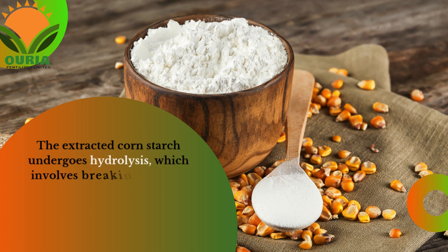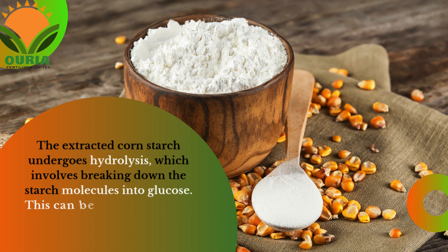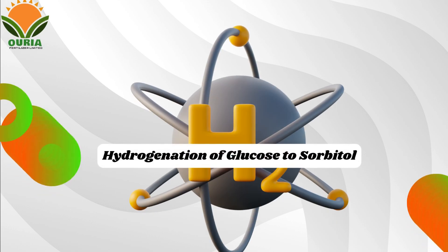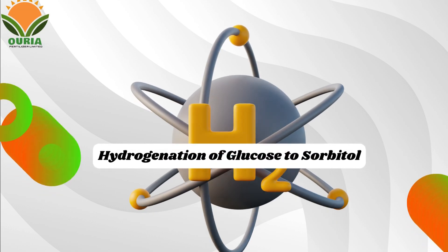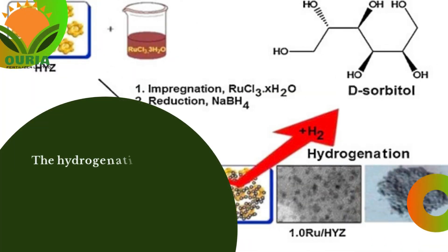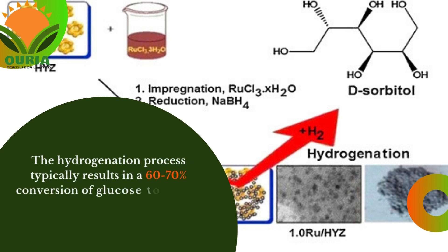Hydrolysis of corn starch to glucose: The extracted corn starch undergoes hydrolysis, which involves breaking down the starch molecules into glucose. This can be achieved using an acid or enzyme-based process. Hydrogenation of glucose to sorbitol: The hydrogenation process typically results in a 60 to 70 percent conversion of glucose to sorbitol, with the remaining glucose forming other byproducts.